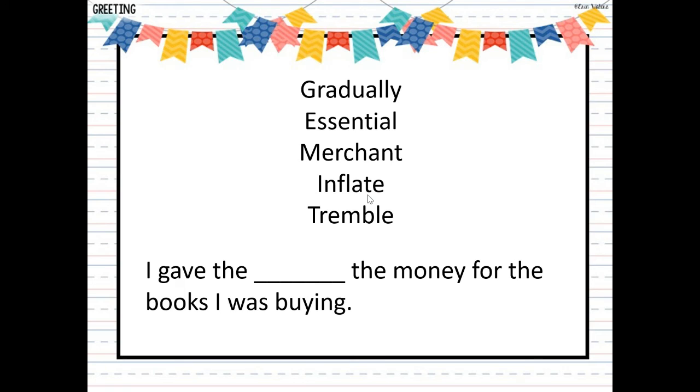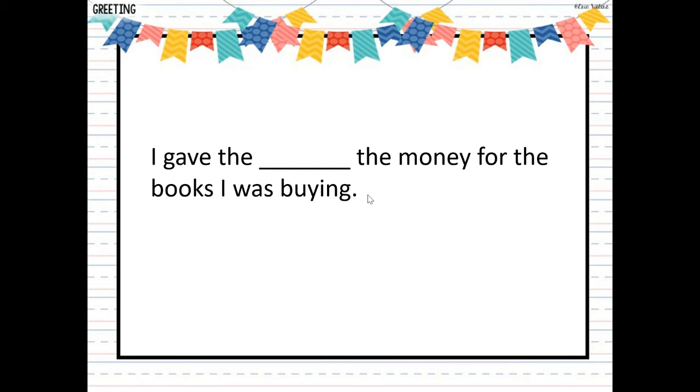I gave the blank the money for the books I was buying. Again, the words are gradually, essential, merchant, inflate, and tremble. I gave the merchant the money for the books I was buying. Remember, the merchant is a producer or someone that you pay.